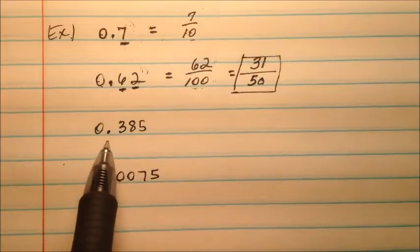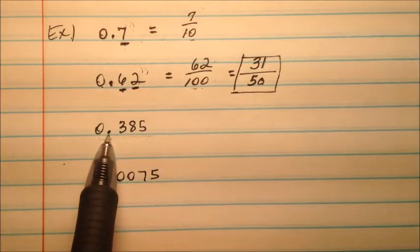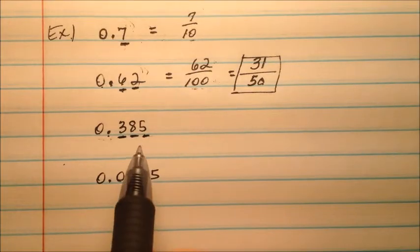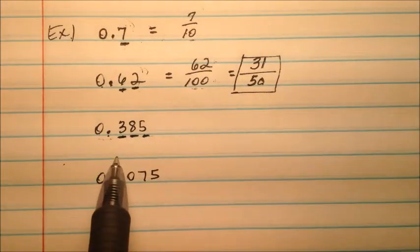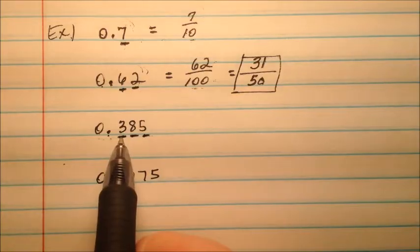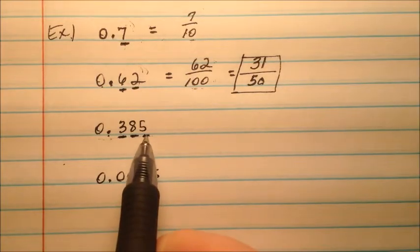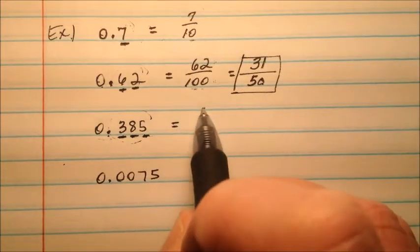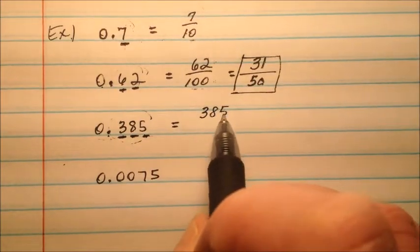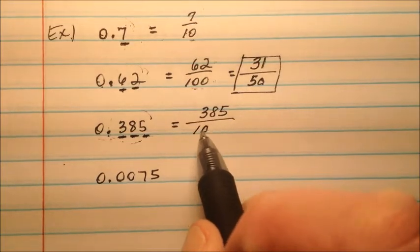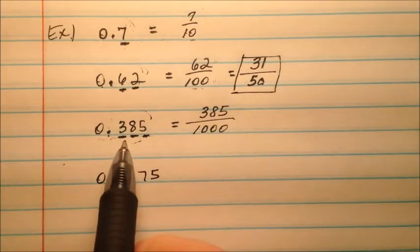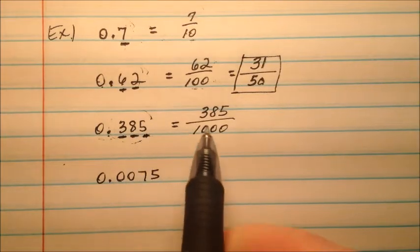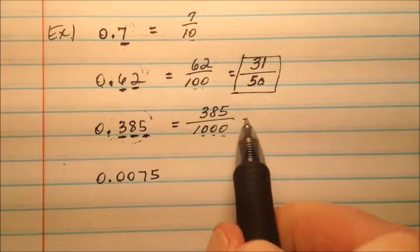My third example here, I have 0.385, so I have one, two, three digits that are being used behind the decimal place. The first one here is the tenths, then the hundredths, then the thousandths. So when I read this, I'm going to read it as 385 thousandths. So that means I'll have a thousand in my denominator. I kind of knew that because one, two, three decimal places are being used. So one, two, three zeros that I have here.